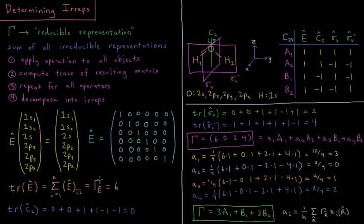So the character of the reducible representation under E is equal to 6 in this instance.